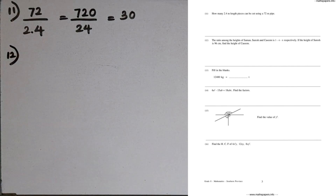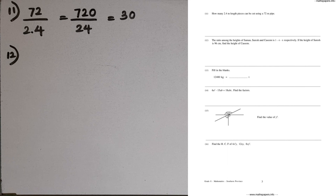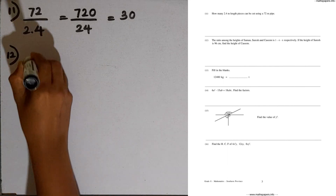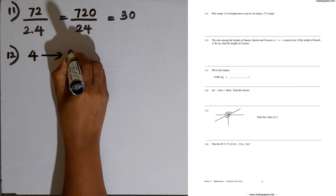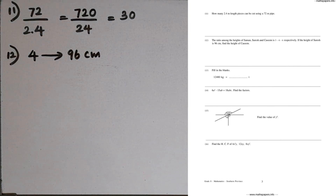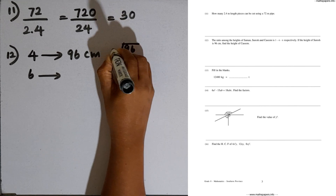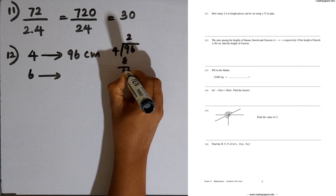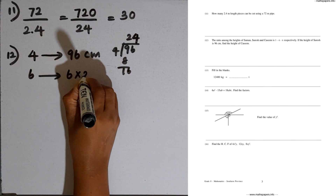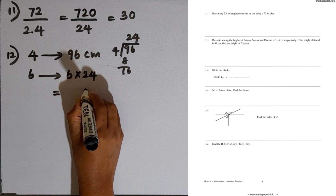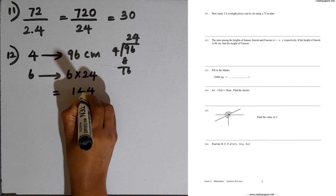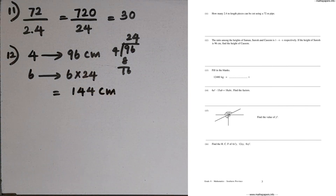Question number 12: the ratio among the heights of Saman, Suresh, and Kasim is 5 to 4 to 6 respectively. If the height of Suresh is 96 centimeters, find the height of Kasim. Suresh's part in the ratio is 4, corresponding to 96 centimeters. Kasim's part is 6. Dividing 96 by 4 gives 24, the value per unit. Then multiplying by 6: 6 times 24 equals 144. So Kasim's height is 144 centimeters.